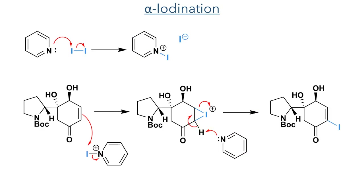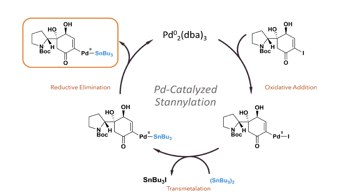With the correct oxidation pattern in place, the authors turned their attention to installing the iodine required for the Stille coupling. Iodine and pyridine was sufficient to complete the desired transformation by generating an iodonium ion, which is attacked by the alkene to form a cyclic iodonium intermediate. Deprotonation of the alpha-carbon restores the double bond and leaves the iodide bonded in the alpha position. The final step in the preparation of the nucleophilic coupling partner was the introduction of a tributylstannyl group. A palladium catalyst was used, which first undergoes oxidative addition into the carbon-iodine bond of the substrate. Bis-tributyltin reacts with this palladium(II) complex, undergoing transmetallation to leave tributyltin bound to the palladium centre. Reductive elimination liberates the target stannylated compound and palladium(0), which can then react further.